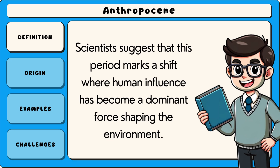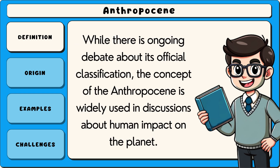Scientists suggest that this period marks a shift where human influence has become a dominant force shaping the environment. While there is ongoing debate about its official classification, the concept of the Anthropocene is widely used in discussions about human impact on the planet.